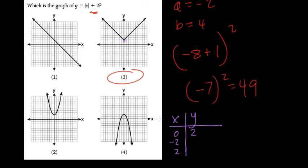But if you plug in negative 2, the absolute value of negative 2 is just 2. Plus 2 is 4, so here we should get 4. So we need to have that point (-2, 4).